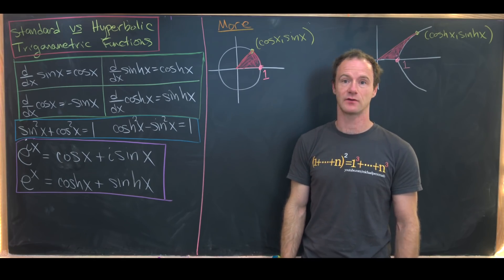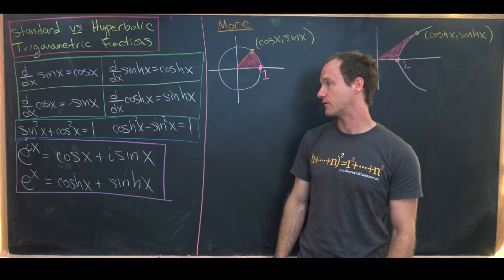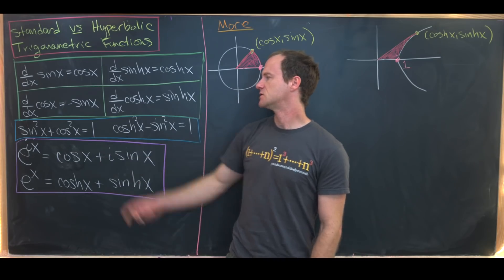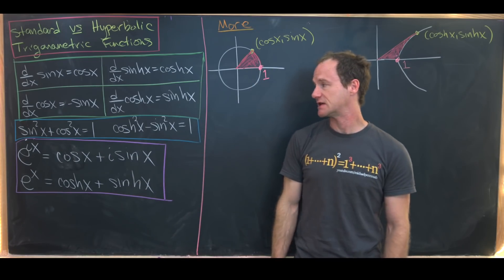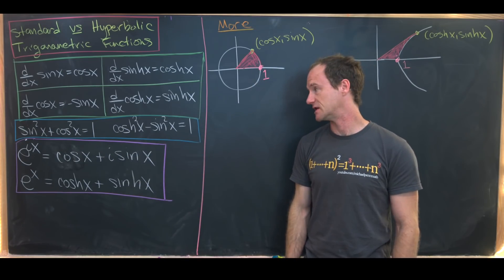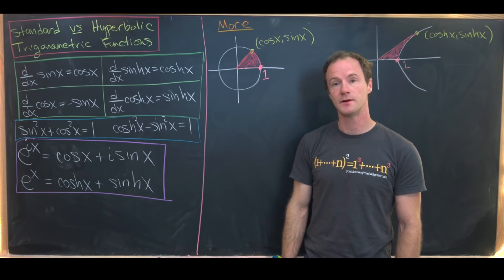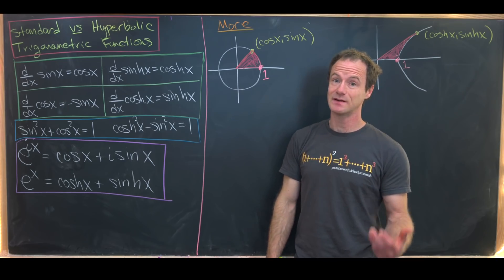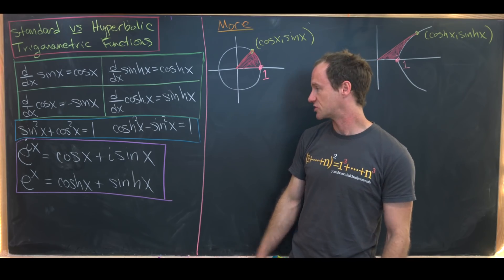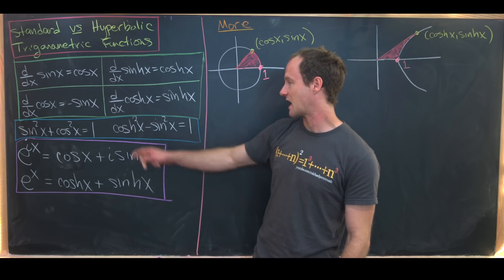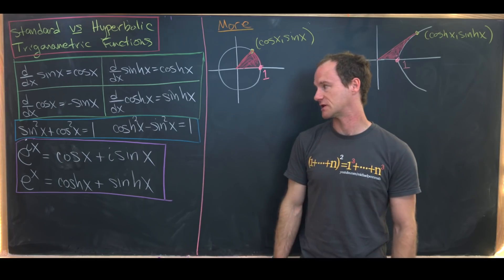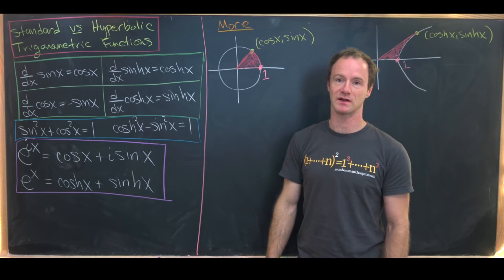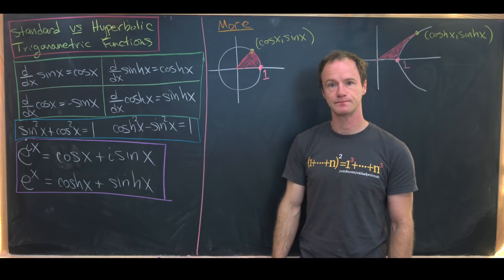Now let's look at the Pythagorean identity for regular trig functions: sine squared plus cosine squared is equal to 1. There's a similar identity for hyperbolic trig functions, and that is hyperbolic cosine squared minus hyperbolic sine squared is equal to 1.